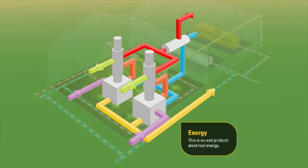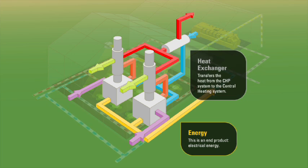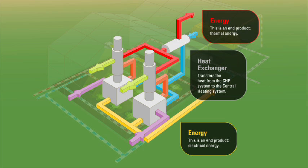In a CHP system, electrical energy is an end product. The heat exchanger then transfers the heat from the CHP system to the central heating system. Thermal energy is also an end product of this process.